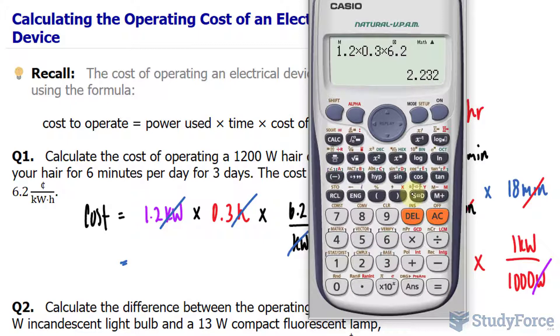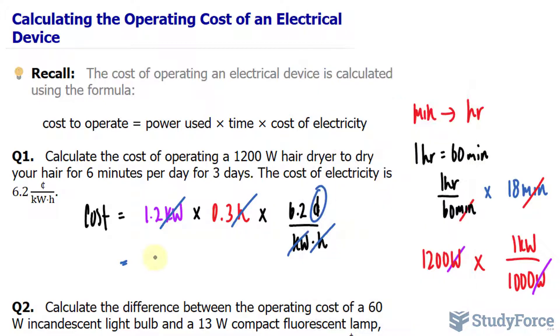And that makes a total of 2.232 cents, or simply rounded to 2.2 cents. Therefore, to operate this hair dryer for six minutes per day for three days means that you'll be spending 2.2 cents.